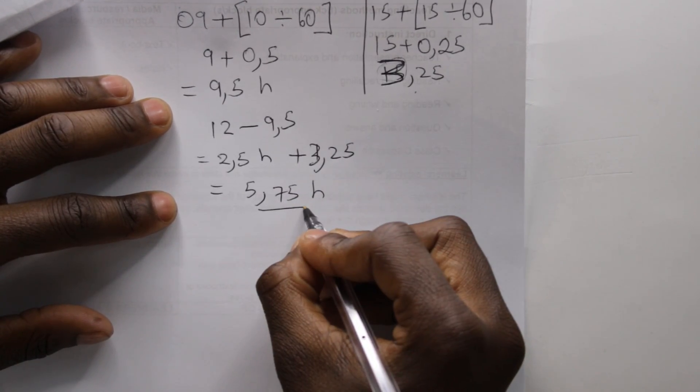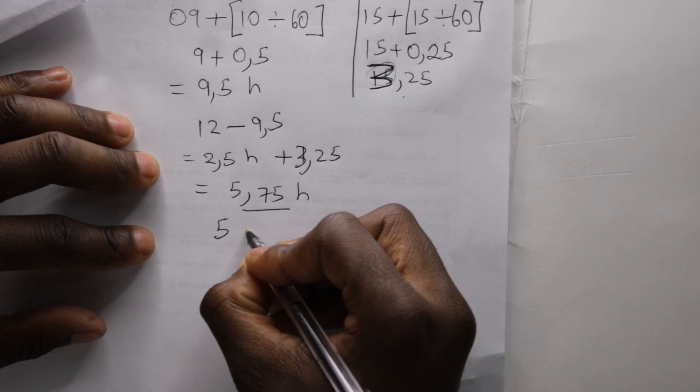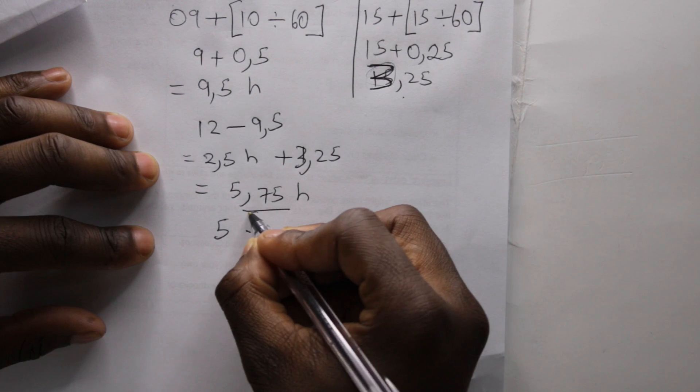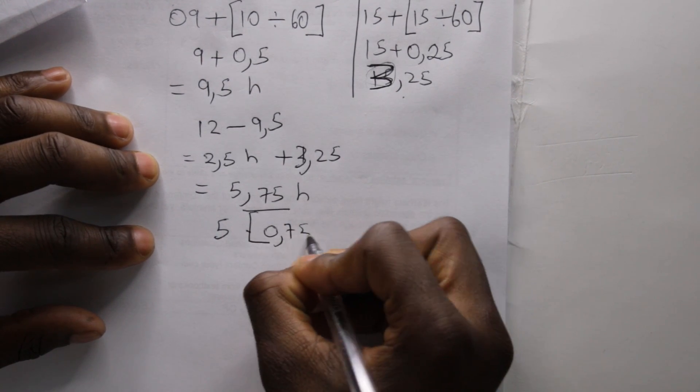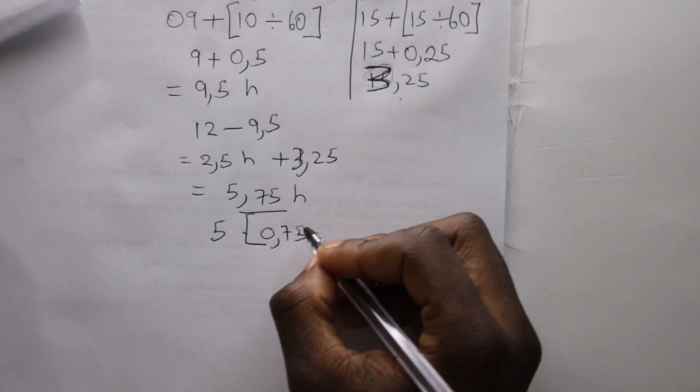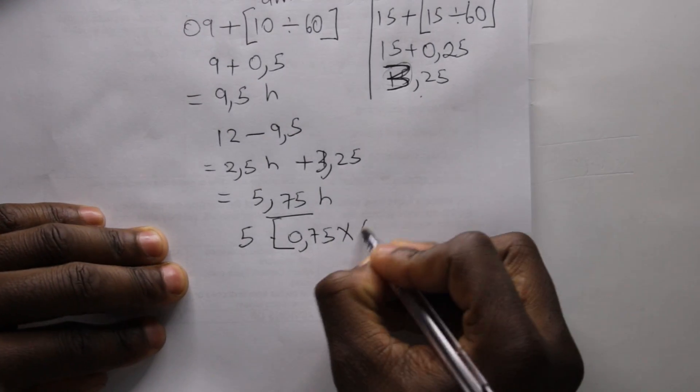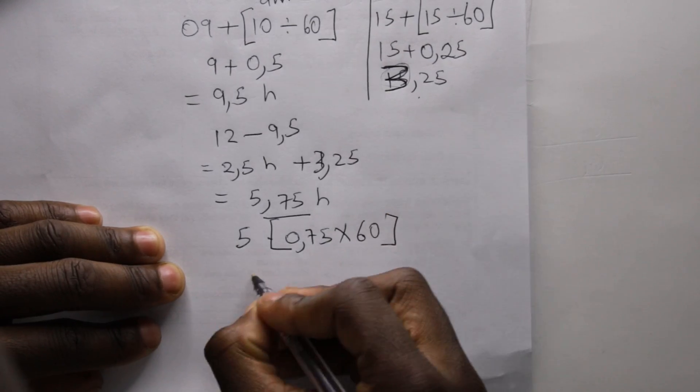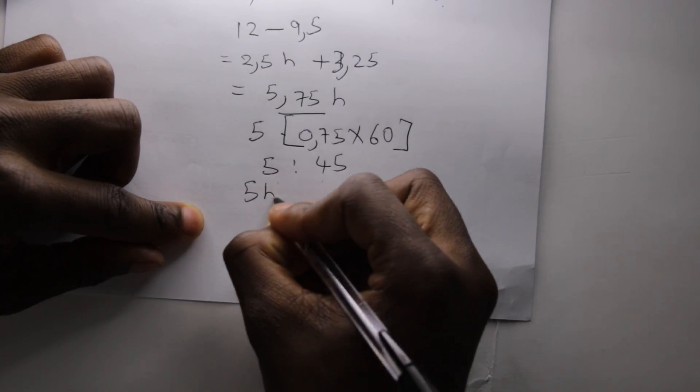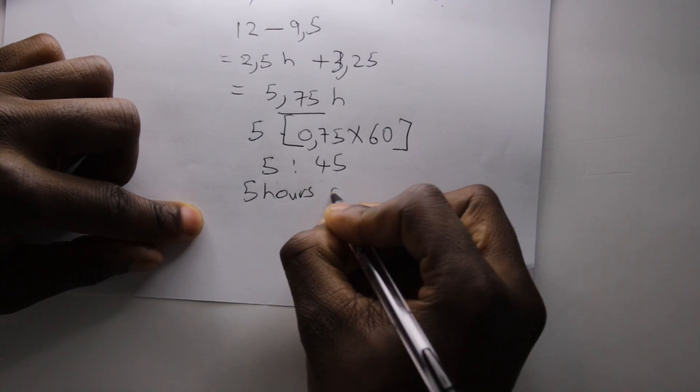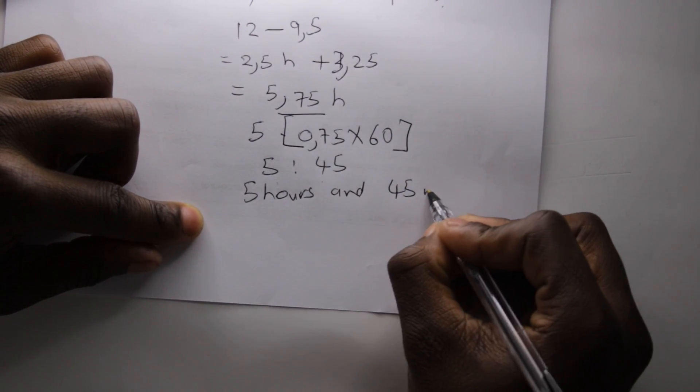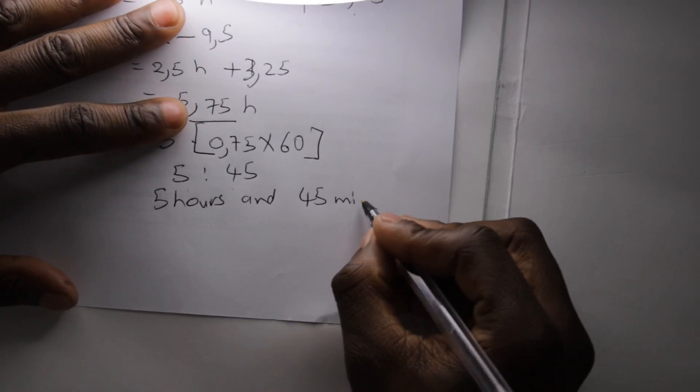Then we must convert this hour since it's not a complete hour. We'll say 5, 0.75 hour to minutes is times by 60, then it's 5 hours and 45 minutes.